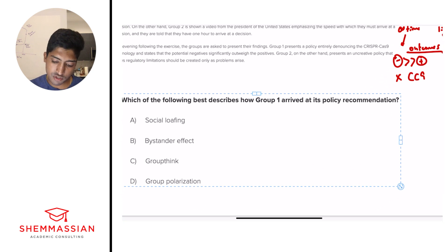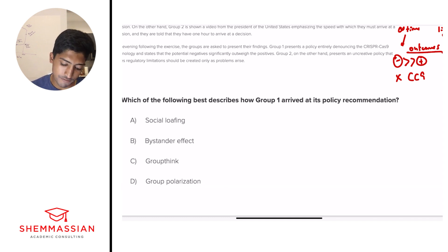Which of the following best describes how group one arrived at this policy recommendation? Is it A, social loafing, B, bystander effect, C, groupthink, or D, group polarization? Right away, before we get into questions, I want to make sure you understand one thing, and that is to understand every single term in these answer choices, not just the correct answer choice. The AMC pulls from a group of words that will be repetitively used over your practice tests, over your QPACs, and over practice questions. And so by understanding every term on there, you're limiting the pool of terms that you don't know.